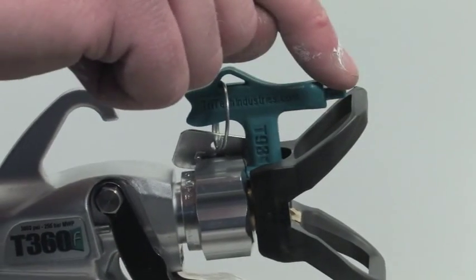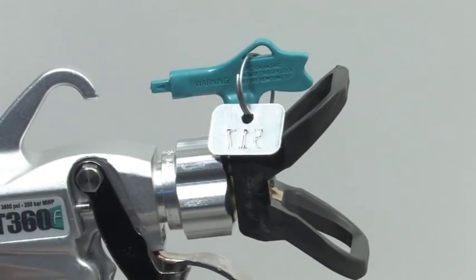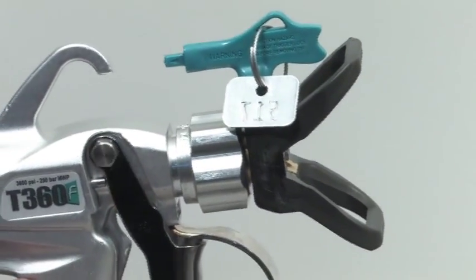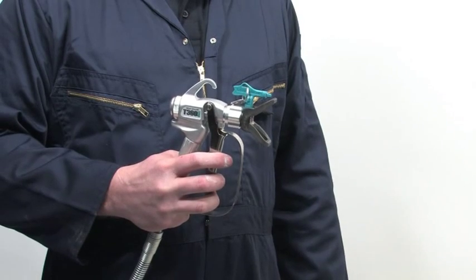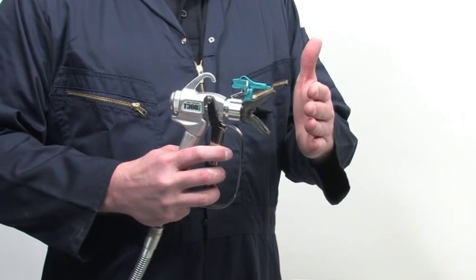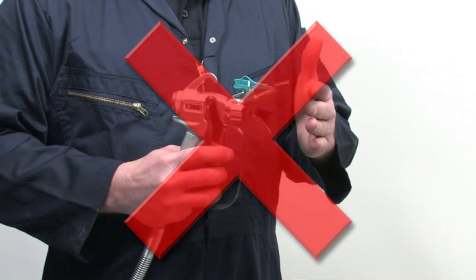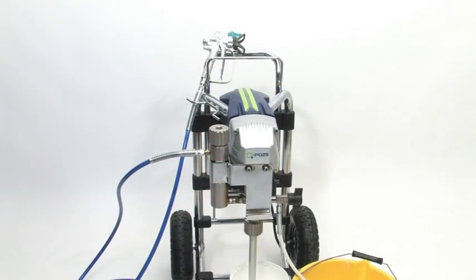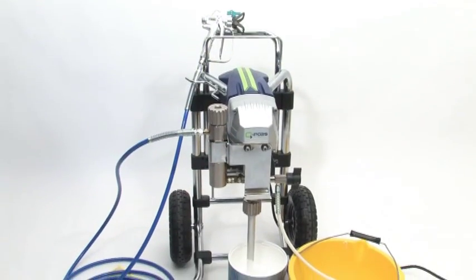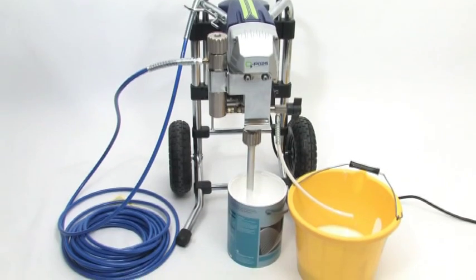The spray tip handle points forward when spraying and can be turned backward for unclogging the tip. Never put your hand in front of the tip and never point the gun at yourself or at anybody else. High pressure paint can pierce the skin and cause major injury.